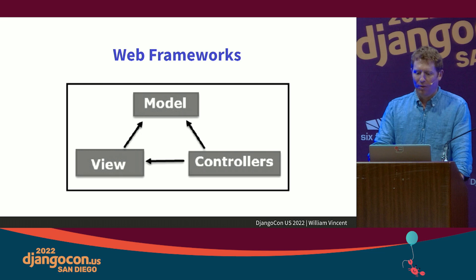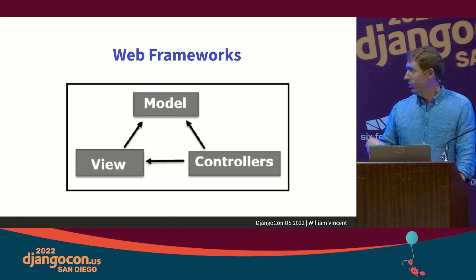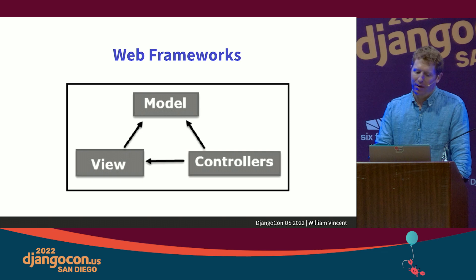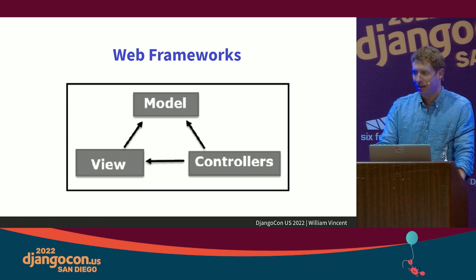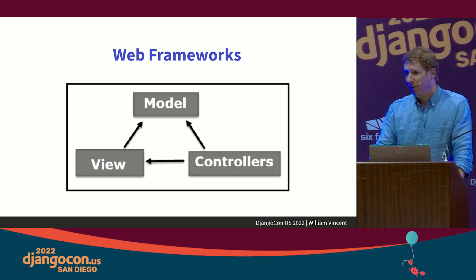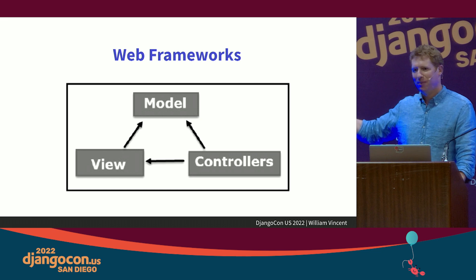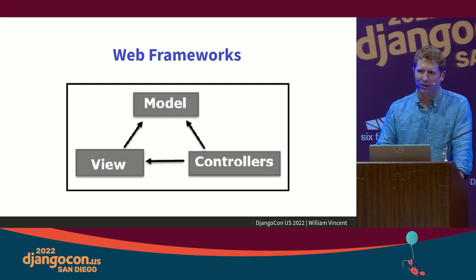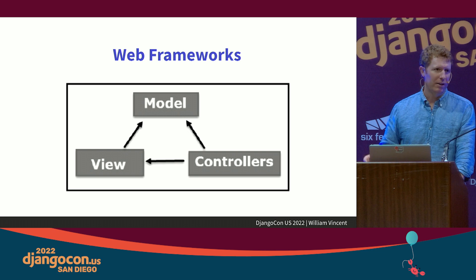The model is where we store our data, connected to a database. The controller handles business logic and behavior — in Django that would be a view. The view in Rails is a presentation layer, which in Django would be the template. So Django, if you map this construct onto it, would be more of an MVT. People who'd done Rails often get really stuck on this because of the view naming difference — don't get stuck on it.